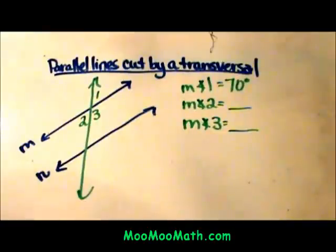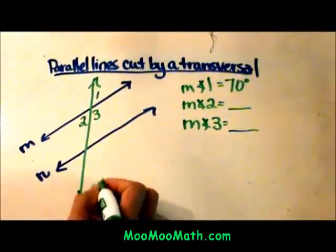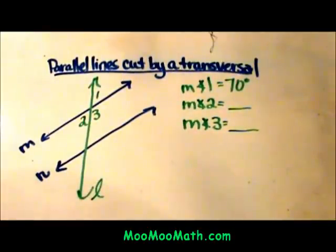Then we have this green line. We're going to call this green line line L. Line L is what we call a transversal. It is a line that intersects both parallel lines.